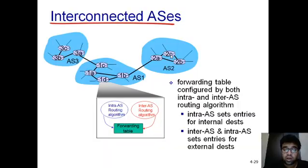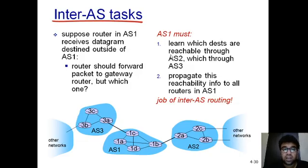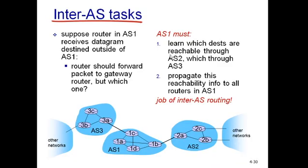Routers get entries from both inter-domain and intra-domain routing algorithms for providing routing across the network of networks. Now let's understand the task of inter-domain routing. Suppose a router in AS1 receives a packet destined outside of AS1. That router has a packet to forward whose destination is outside this autonomous system — so how does this router proceed?